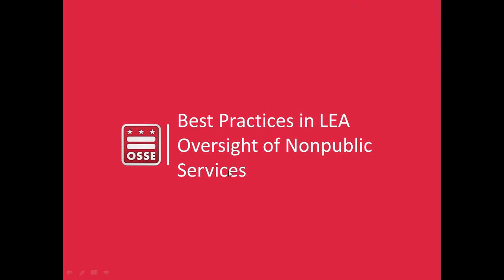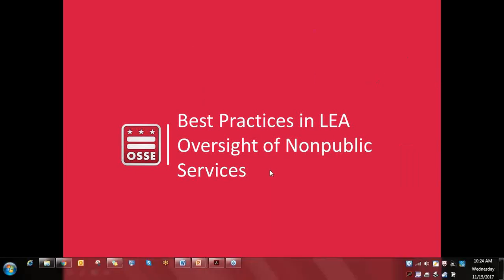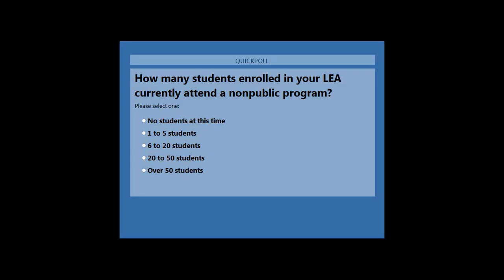Now let's talk about best practices in oversight of non-public services. First, a poll question: how many students do you have enrolled in your LEA who are currently attending a non-public program? If you're from DCPS, you would likely check over 50 students, as DCPS is the largest LEA in the city. For smaller charter schools you probably have fewer students; for larger multi-campus charters, you may have a larger number attending non-public campuses while still enrolled at your LEA.